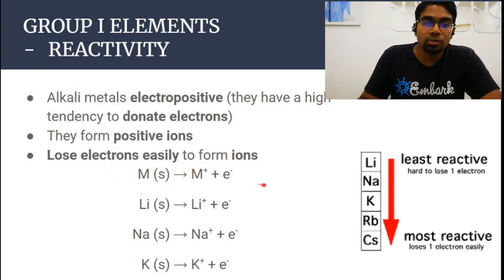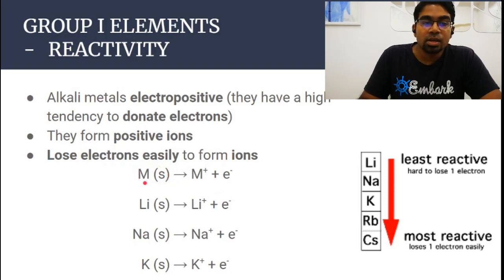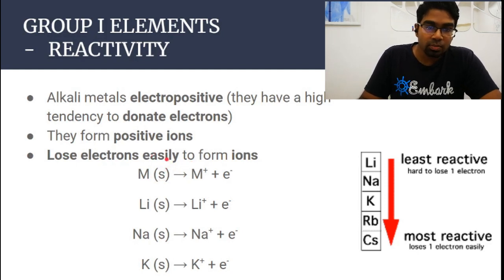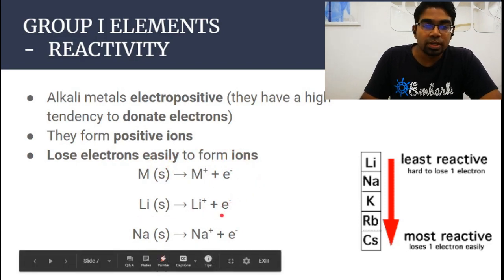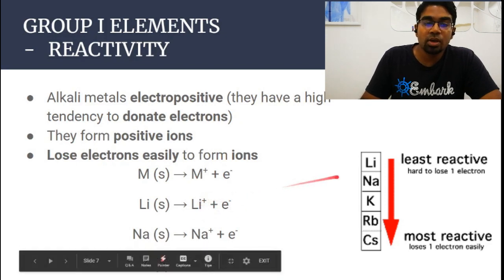In chemical equations, we write the loss of electrons as: M → M⁺ + e⁻. M represents the group 1 alkali metals. Instead of writing minus electron on the left, we write plus electron on the right. So lithium metal will lose one electron to form a lithium ion. All ions of group 1 elements will be 1+, because they only lose one electron.